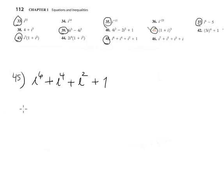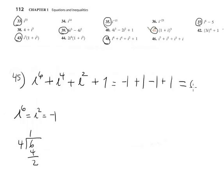Again, power of the i. i to the 6 is 6 divided by 4, that's 1, remain the 2 is i to the 2nd. The i to the 2nd is negative 1. This is negative 1. Now i to the 4 is positive 1, i to the 2nd is negative 1, and plus 1. It's obvious the answer is 0.